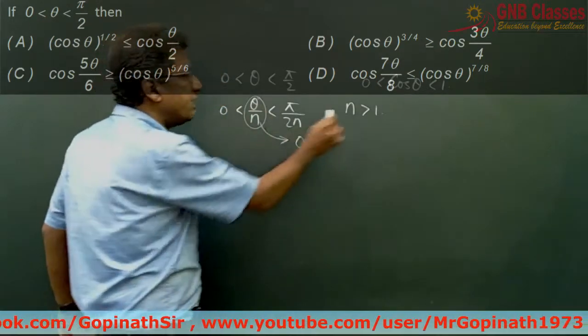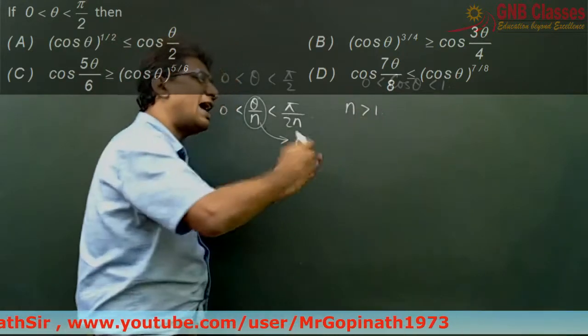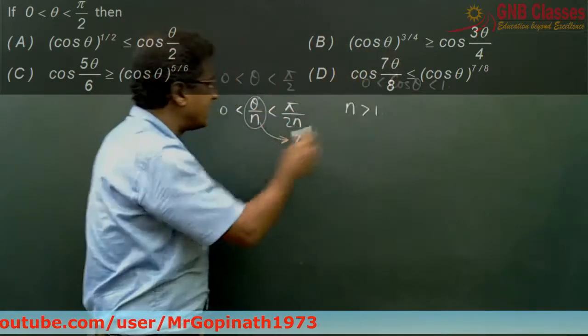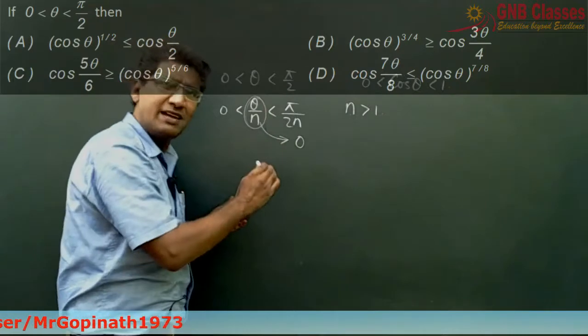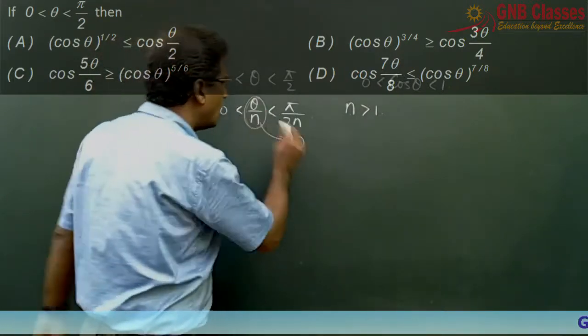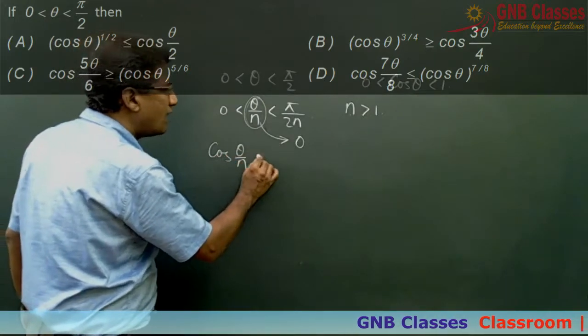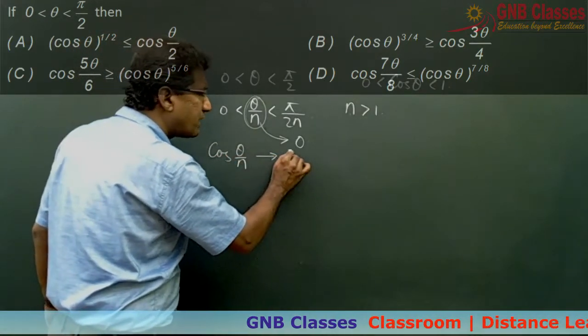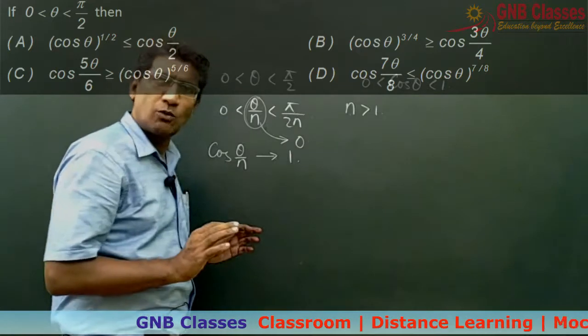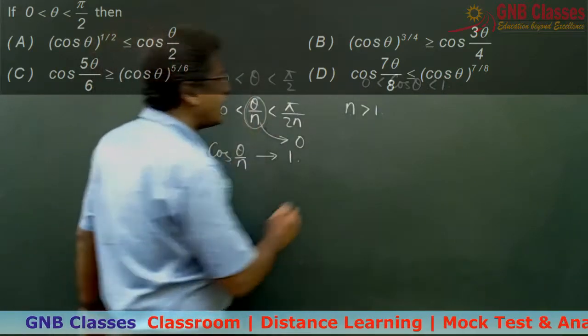Because if n is greater than 1, the higher the value of n, the lesser will be theta by n, and it will be approaching towards 0. So in that case your cos theta by n will approach towards the value 1. On the other hand you observe...